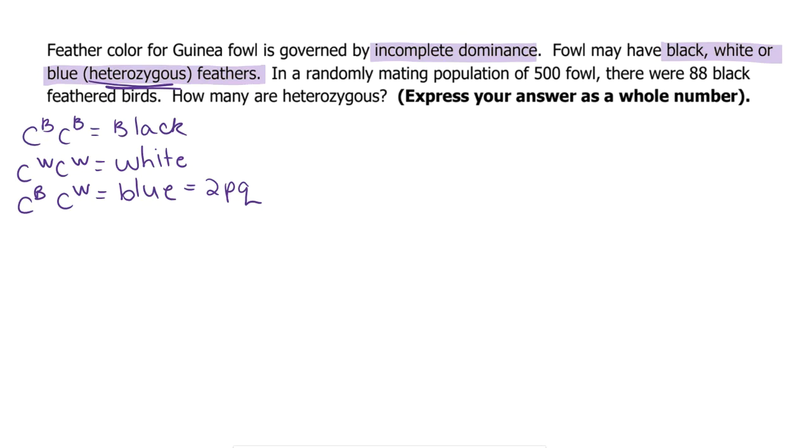In a randomly mating population of 500 fowl, there were 88 black. So since they give us the number for black, and we always like to start with Q squared, let's make that our Q squared value, which means the white has to be our P squared value.